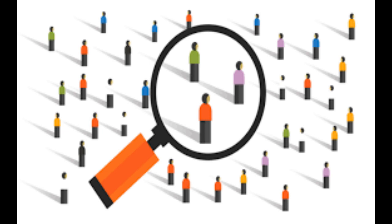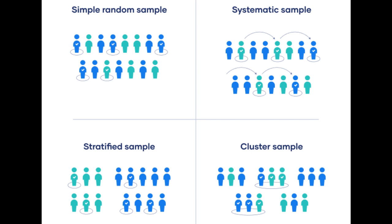Now let us dive into the theory of sampling and different sampling methods. When you conduct research about a group of people, it is rarely possible to collect data from every person in that group. Instead, you select a sample — the group of individuals who will actually participate in the research. To draw valid conclusions from your results, you have to carefully decide how you will select a sample that is representative of the group as a whole.